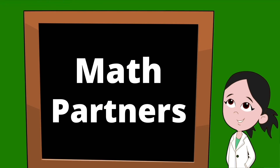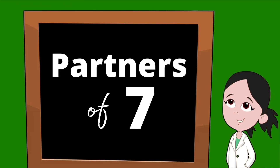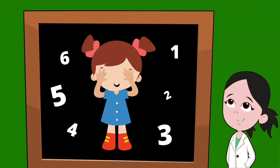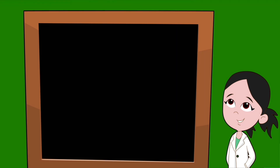Today we're going to be learning about math partners and the partners of the number seven. What are math partners? Math partners are the different pairs of numbers that can be put together to create another number. These partners are hiding inside other numbers, but don't worry, we're going to show you how to find them. Let me break it down for you so it makes sense.